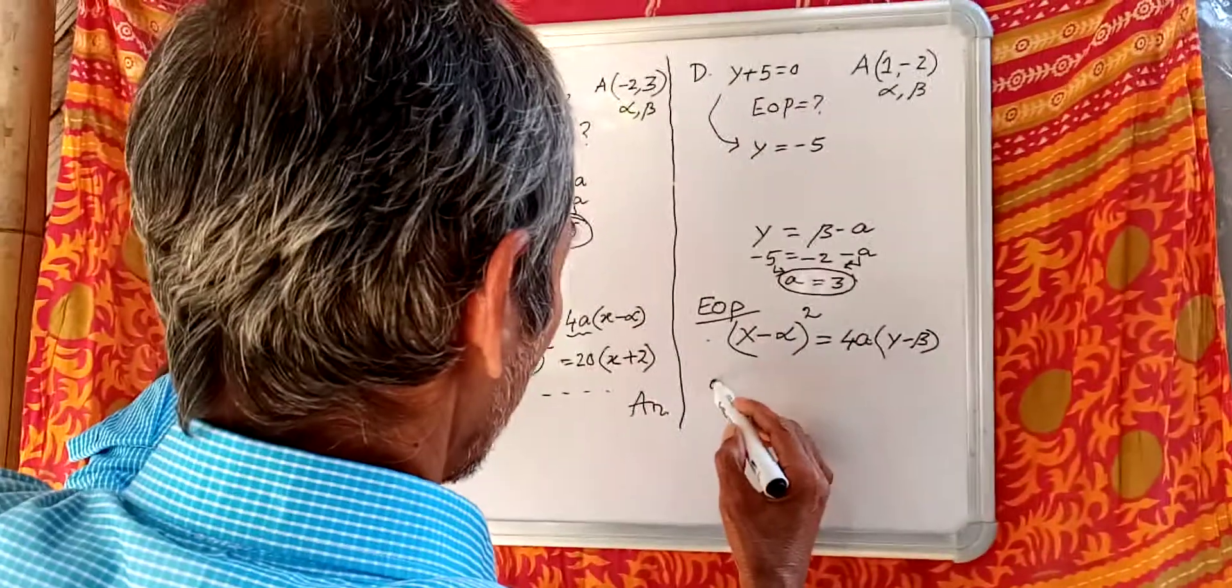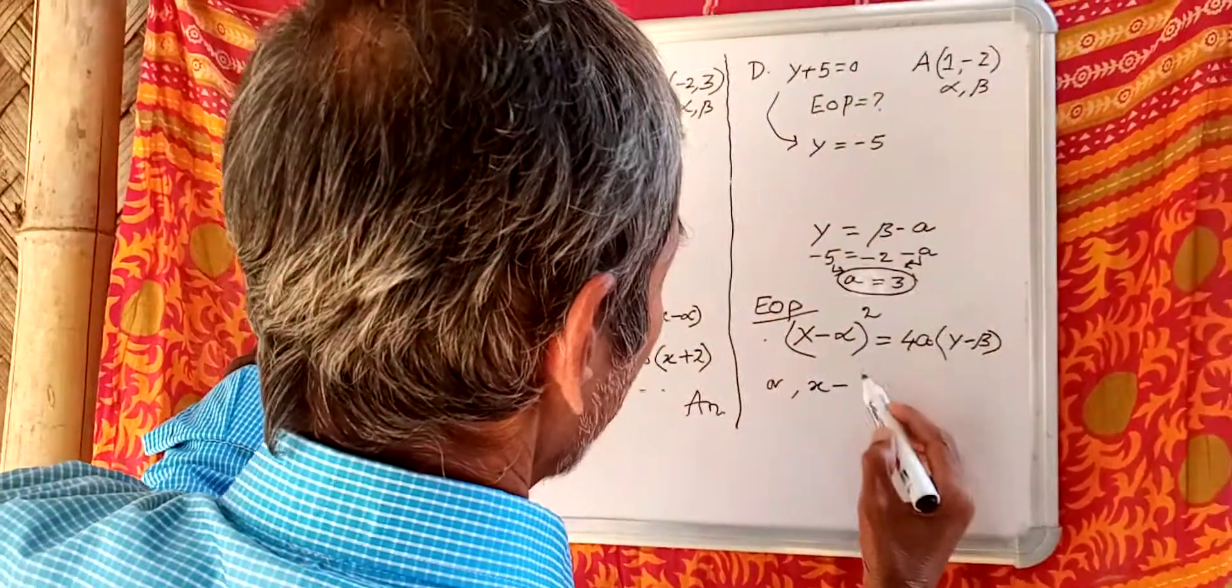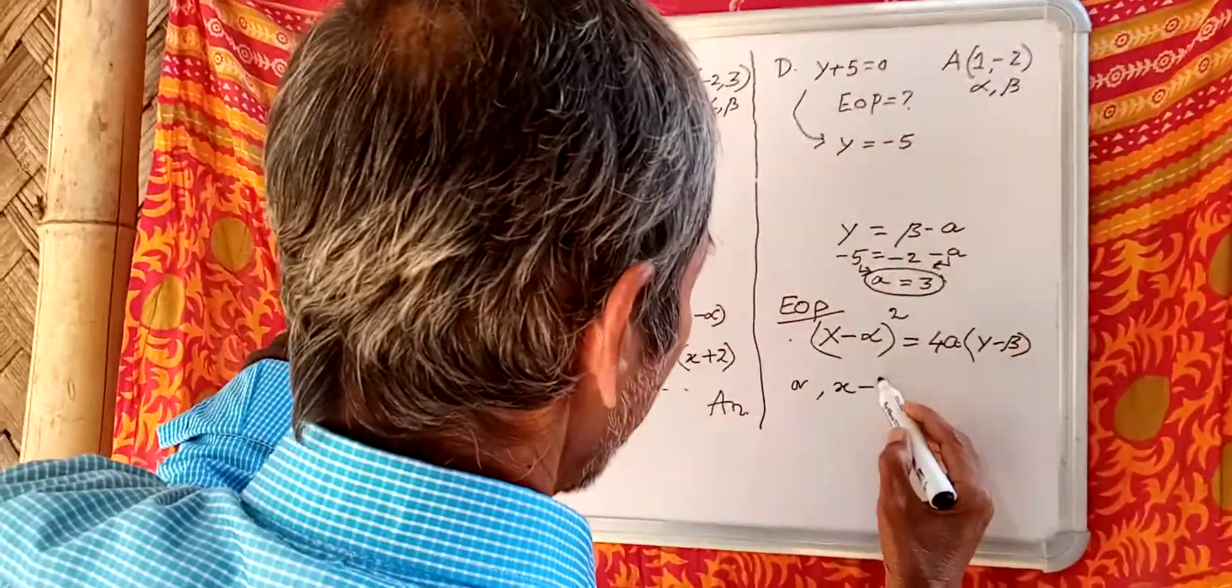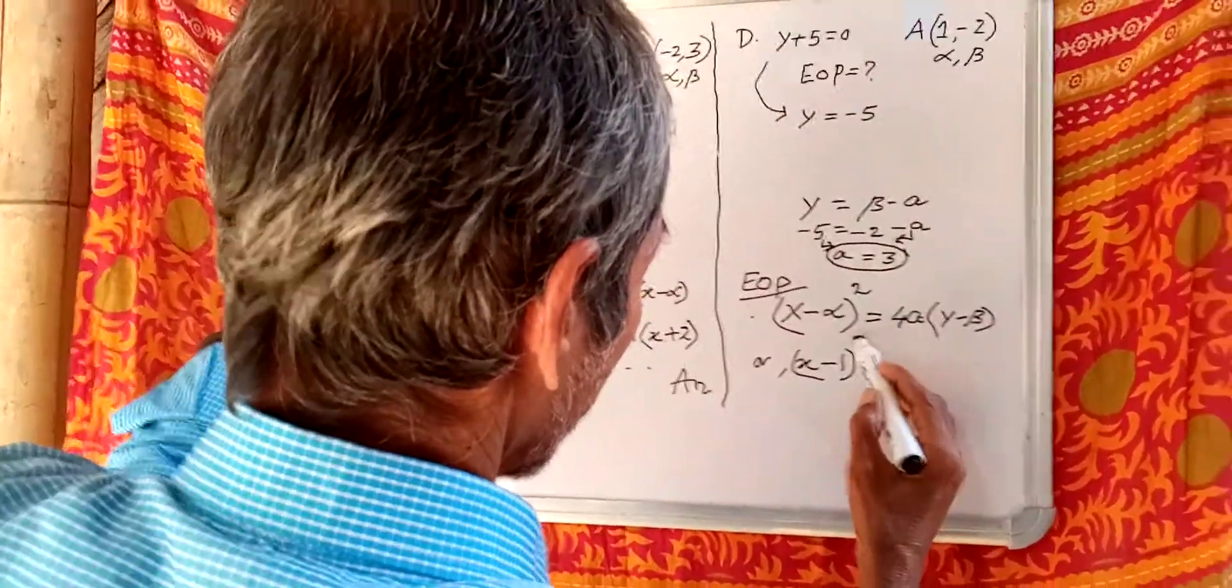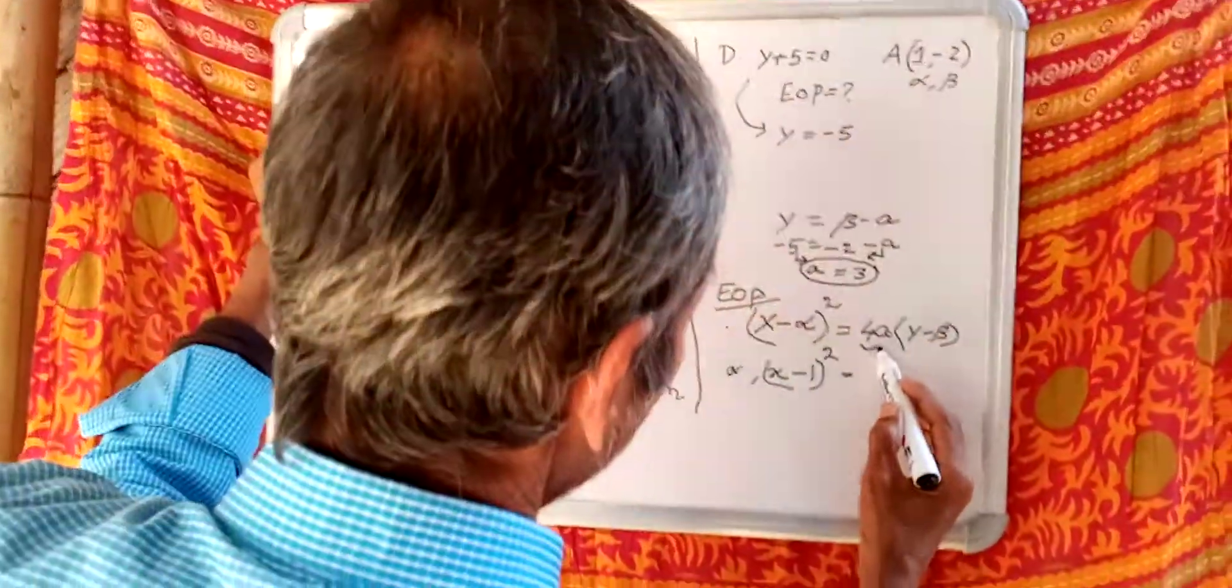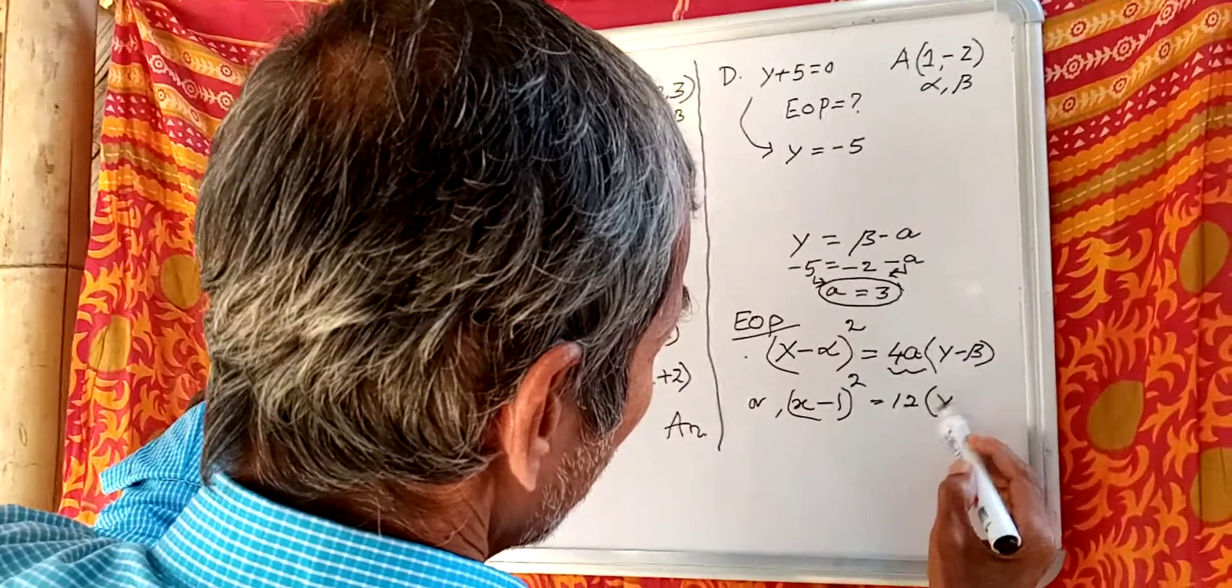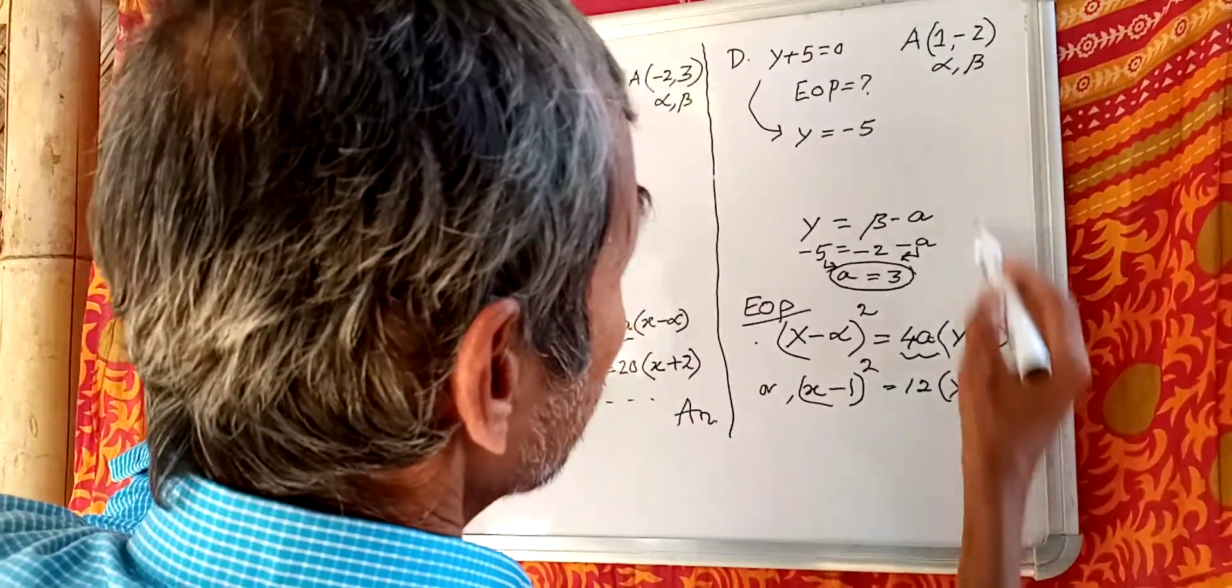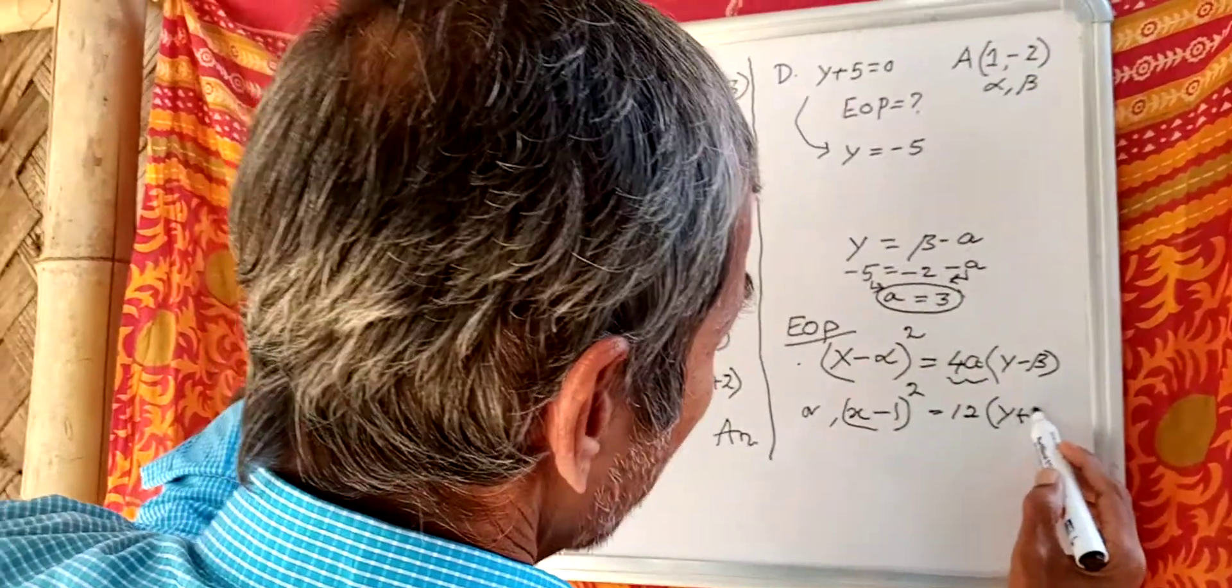X minus 1 whole square, because alpha is 1. A is 3, therefore 12 into Y. Y minus beta is 2, Y plus 2.